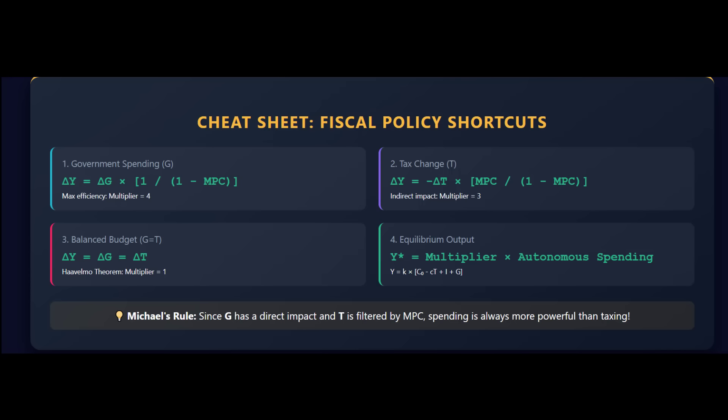This balanced budget policy, while it might sound responsible, is a pretty weak tool if you're in a real economic crisis needing a big, fast jolt. It might work well for shifting resources to the public sector without growing the debt, but as an emergency booster shot, it just doesn't work. This deep dive has really shown us that $50 is not always $50. Direct government spending of 50 gave a 200 unit boost; the tax cut of 50 delivered only 150; and the balanced budget move left us with just 50. That MPC of 0.75 — that one behavioral number — determined the success or failure of all three major policies.